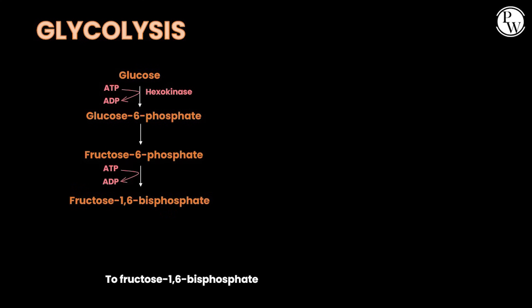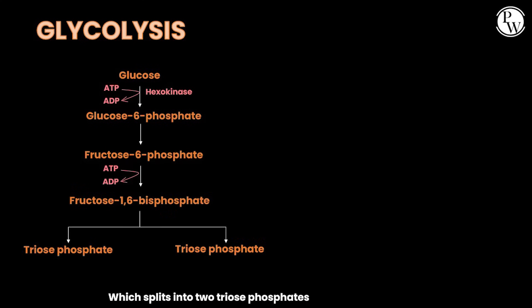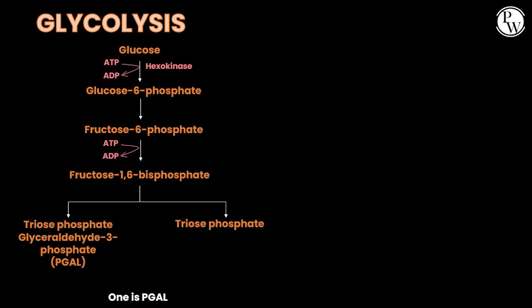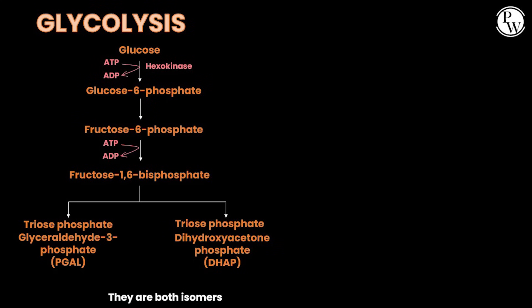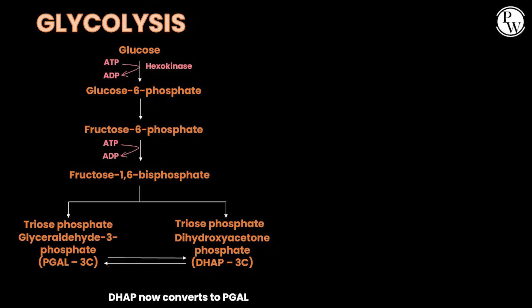Fructose-1,6-bisphosphate splits into two triose phosphates: one is PGAL and the other is DHAP. They are both isomers containing three carbons. DHAP then converts to PGAL.